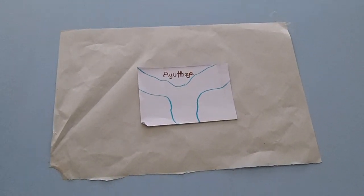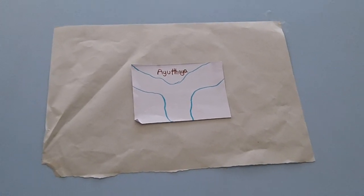The water then reaches Ayutthaya, where other tributaries join the Chao Praya.